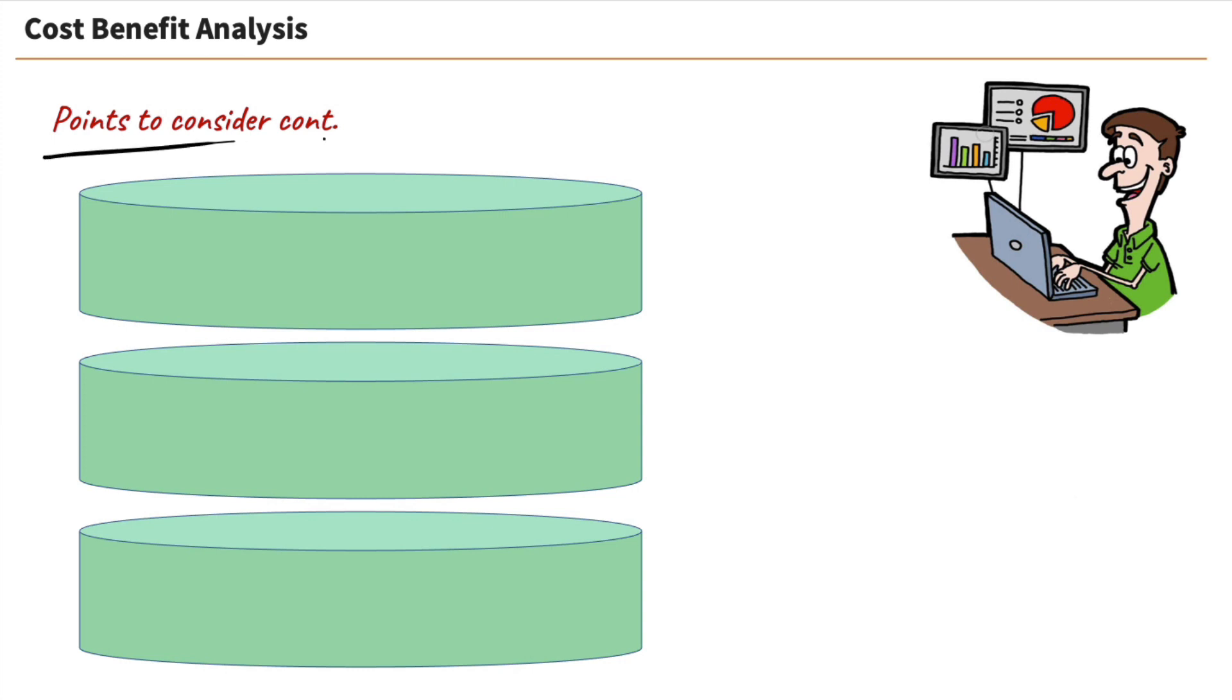We're continuing with our points that we need to consider when we're performing a cost-benefit analysis in the cloud. Well, one of them is a shift from CAPEX to OPEX. And remember, we talked about these earlier where CAPEX is where we had a large upfront financial investment in creating our infrastructure. We had to go out and buy all of our infrastructure and spend all that money up front. Whereas OPEX is a month-to-month financial investment that we're making and we can work that into our expenses. And we can easily forecast what our needs are and what our expenses are going to be.